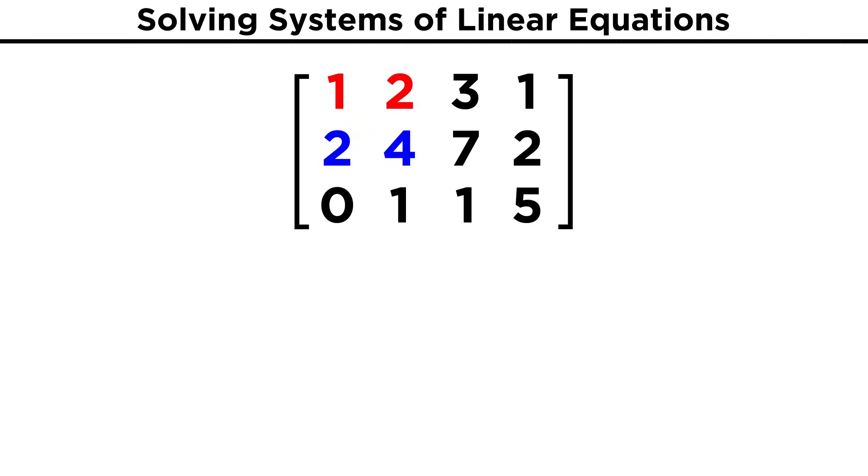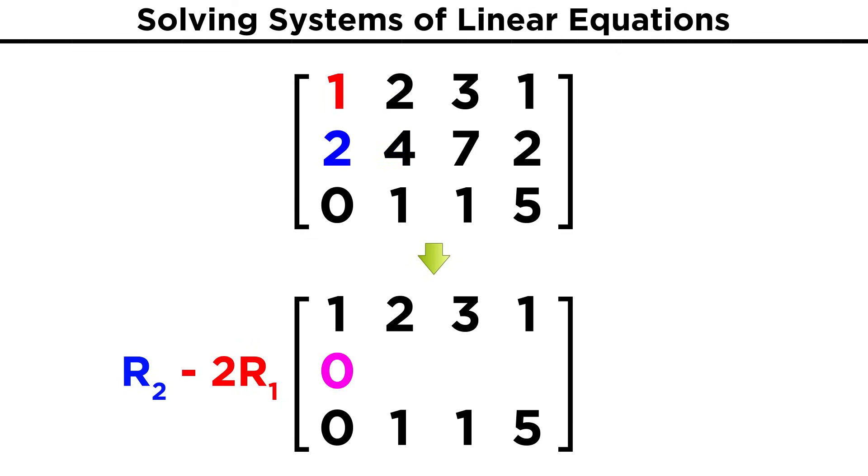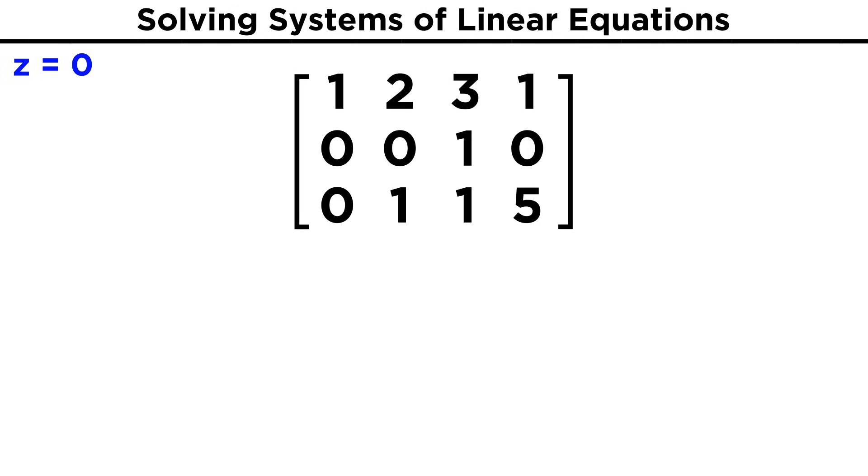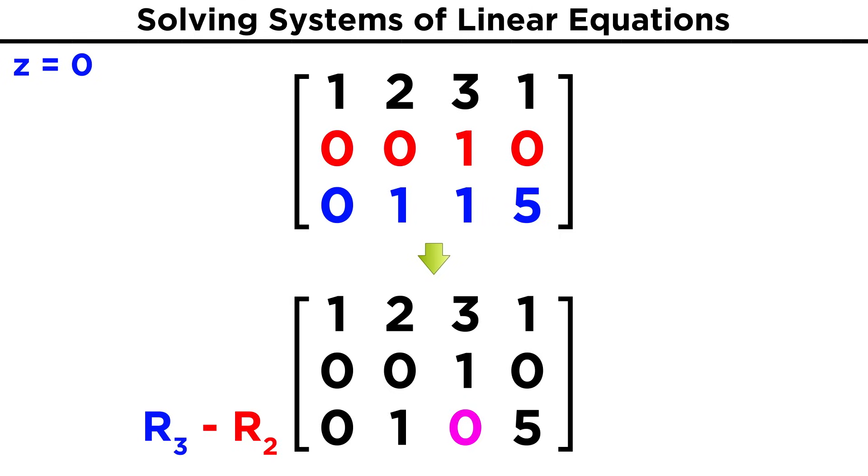What next? Let's say we notice that the first two coefficients in the first row are precisely half the corresponding second row coefficients. So what we can do is subtract twice the first row from the second row to get a new second row. So 2 - 2(1) is 0. 4 - 2(2) is 0. 7 - 2(3) is 1. And 2 - 2(1) is 0. That was a very productive move, because we have just solved for one of the variables. Z must be equal to 0. Now we are in great shape to solve for X and Y. Let's subtract the second row from the third row, to get a new third row, because that will get rid of this one in the third position. And now we have 0, 1, 0, 5. That means Y must be equal to 5.